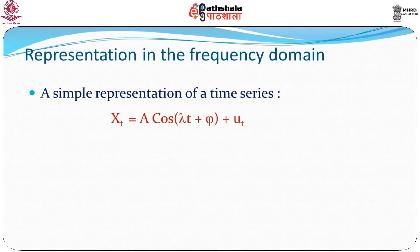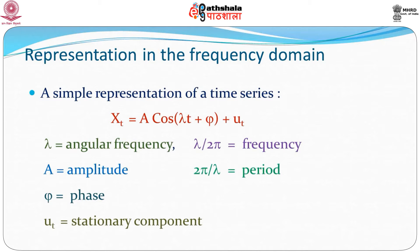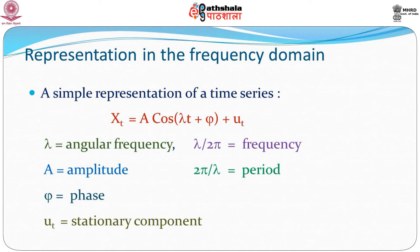A simple representation of a time series in the frequency domain would be x_t = A·cos(λt + φ) + u_t. Here λ is generally referred to as angular frequency, but we will generally be looking at λ/(2π), which we will call the frequency. A is the amplitude, and 2π/λ is referred to as the period. φ is the phase angle and u_t is a stationary component. So in this case, we are trying to represent the time series in terms of a sinusoidal curve and some random component.